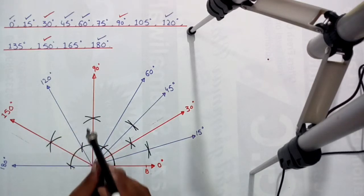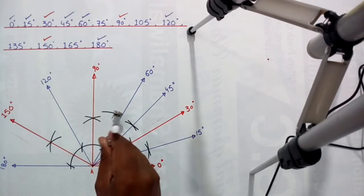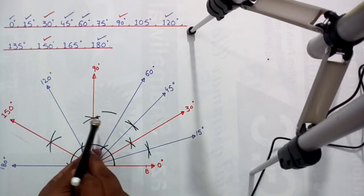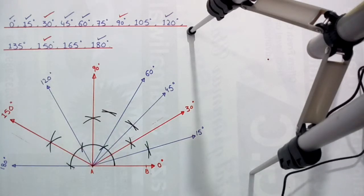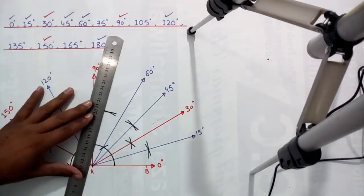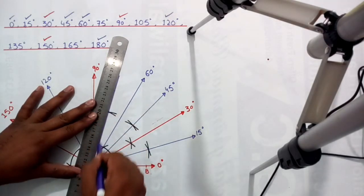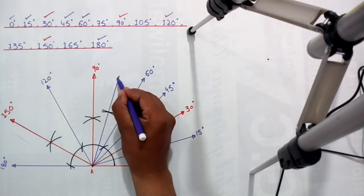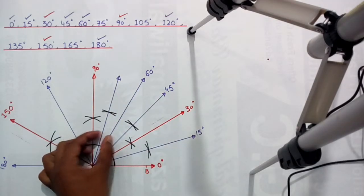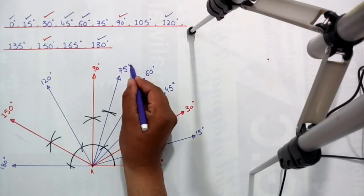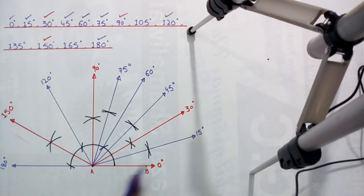Now divide this angle into two equal parts to find 75 degrees. Put the needle of the compass on this point and draw an arc, then put the needle on the next point and draw a second arc which cuts the first. Draw a line from point A through this intersection — 60 plus 15 equals 75 degrees, the line of 75 degrees with the horizontal axis.